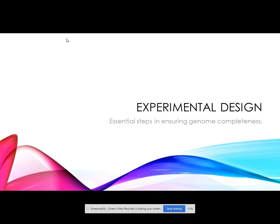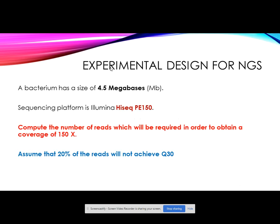Experimental design is essential to ensuring genome completeness and obtaining a good genome sequence. When we look at a bacterial genome, the approximate size is 4.5 megabases in general. However, this may range from 3 megabases to up to 8 or 9 megabases depending on the strain.